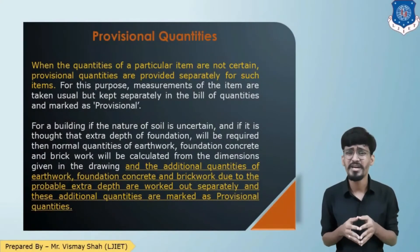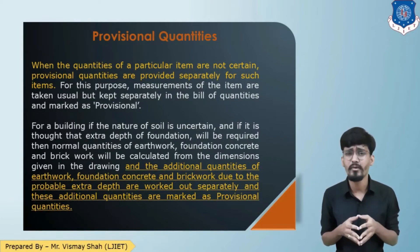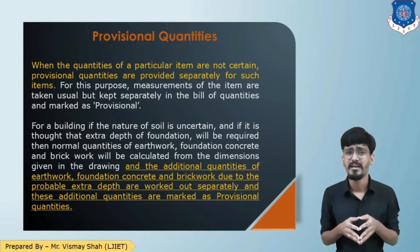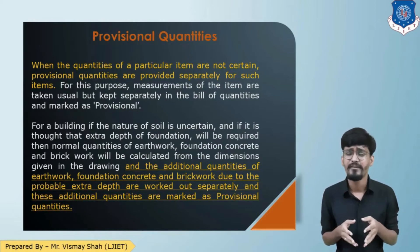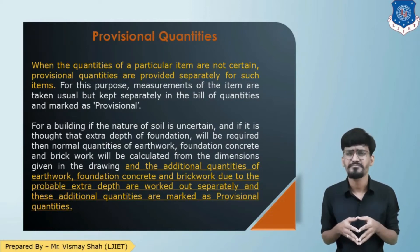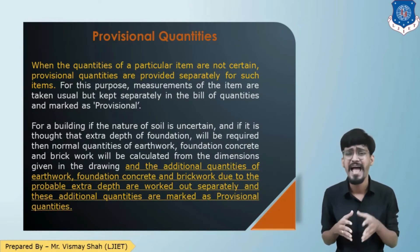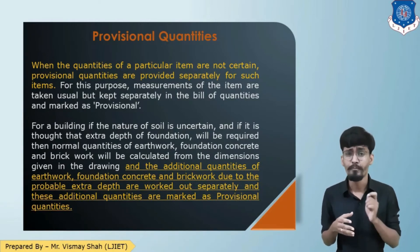The next is provisional quantities. When the quantities of certain items of work are not very accurate or certain, provisional quantities are provided for such items. For this purpose, the quantities are calculated and kept separately, marked as provisional quantities. For example, if the nature of soil is uncertain and it is thought that extra depth of foundation is required, the additional quantities of excavation, foundation, PCC, brickwork, and masonry are calculated separately and kept in the estimate marked as provisional.